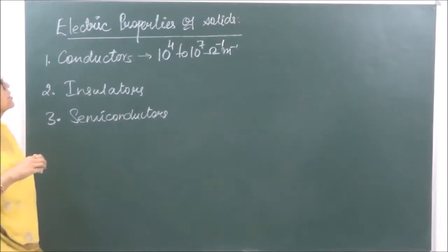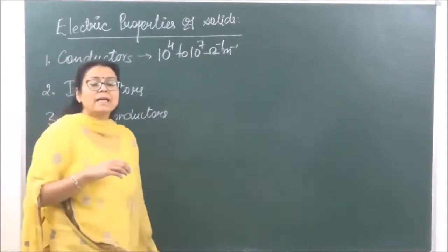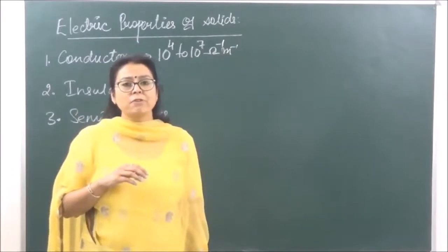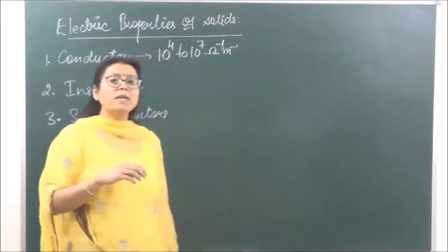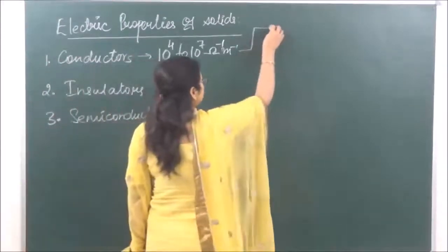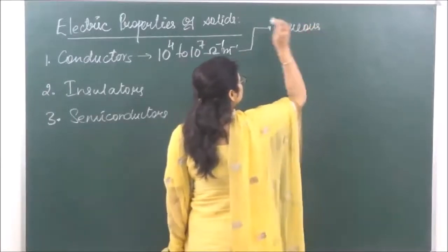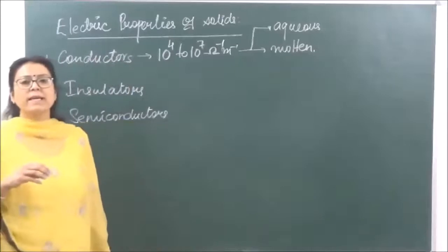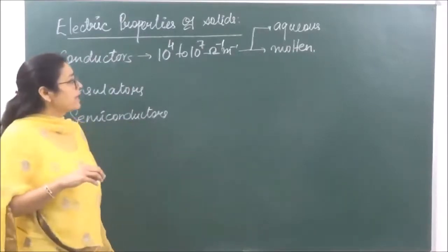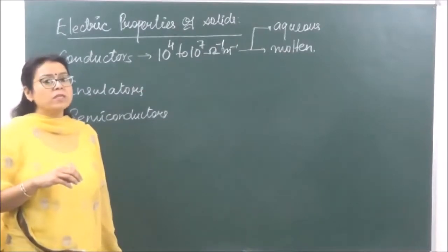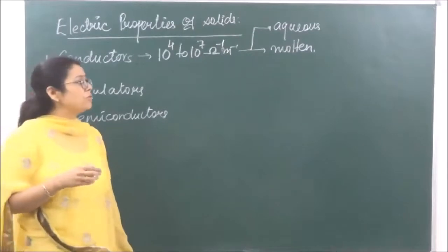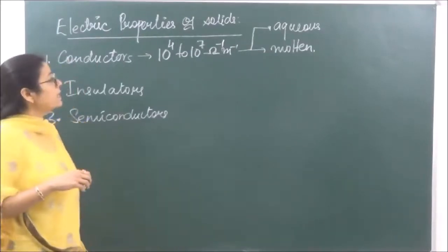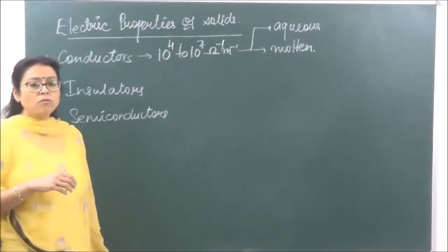One important thing to remember is that ionic conductors do not conduct electricity in the solid state, because they do not have any free electrons or free ions. They only conduct electricity in the aqueous state or in the molten state, because in the aqueous state the ions are free to move, and in the molten state the ions become loose and can move easily. Therefore, they conduct electricity only in the aqueous and molten states.